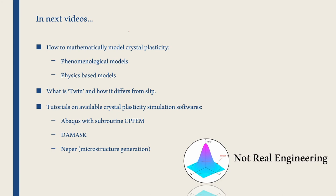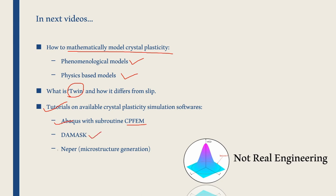In this video we did not see anything about mathematical modeling or equations. In future videos, we will see how to mathematically model crystal plasticity — mainly phenomenological models and physics-based models, with physics-based being more complicated. We will also cover twinning and how it differs from slip, and tutorials on crystal plasticity simulation software including Abaqus with its CPFEM subroutine, the open-source software DAMASK, and Neper for generating microstructures. Please comment any questions below — thank you for watching.